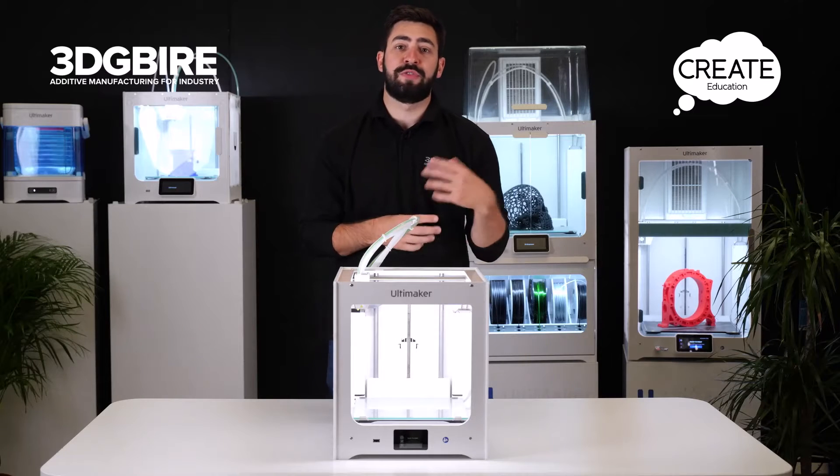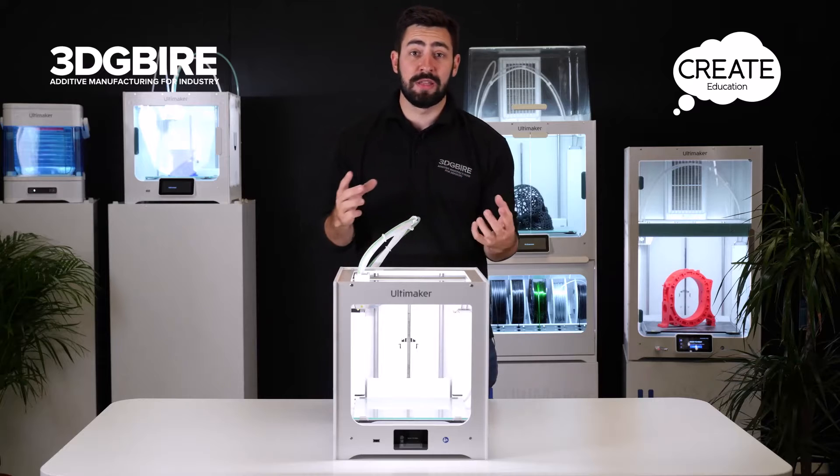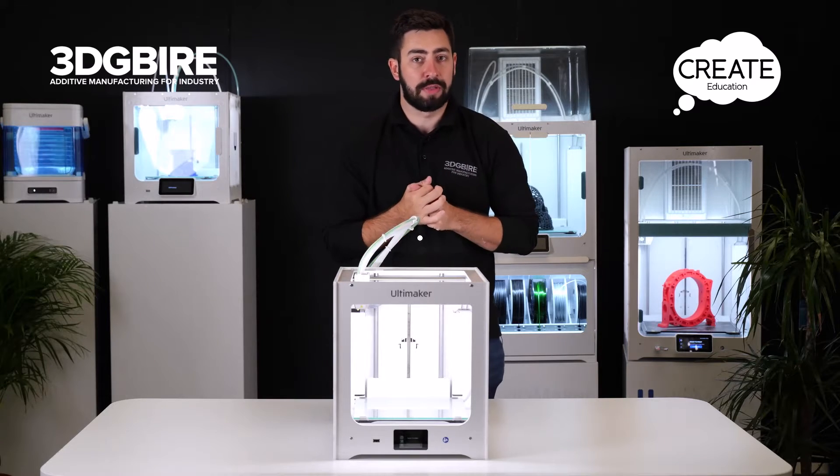This video covers the sequence of events to follow if you get any broken bits of filament in the Bowden tube or any strands that can cause extrusion issues. Let's have a deep dive into how we look at that.